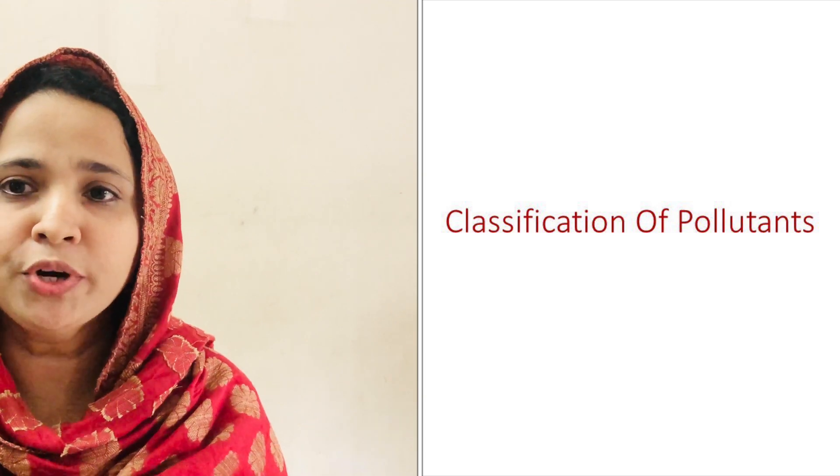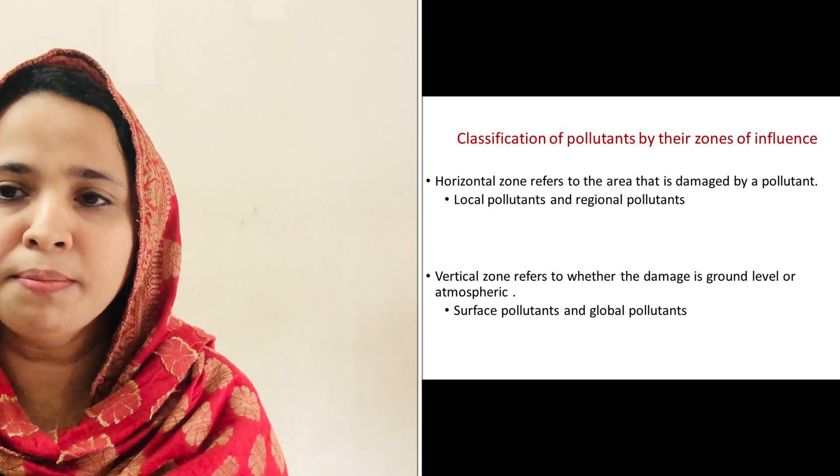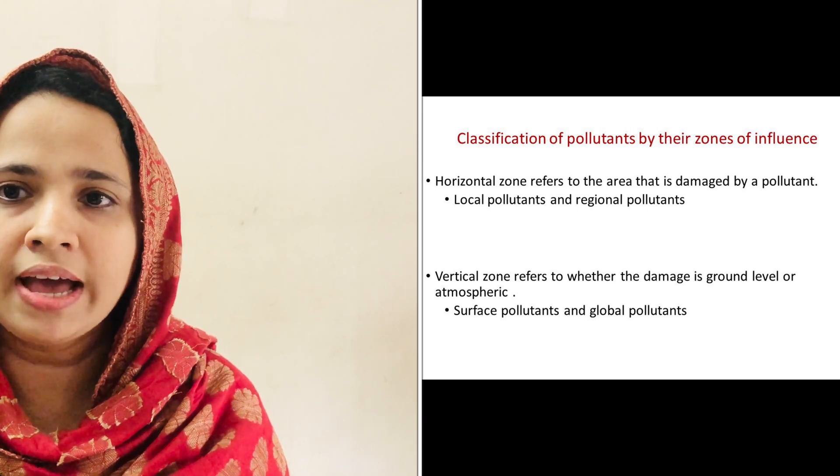Now we can come to the point of pollutant. What do you mean by the term pollutant? It is the factor or agent which is responsible for pollution. It may be any solid, liquid or gaseous substance that contaminates the environment — any solid, liquid or gaseous substance present in greater concentration than in natural abundance, or any agent like heat or noise produced due to human activities or natural happenings, and ultimately harmful to the environment, is called a pollutant. Pollutants may be classified in different ways. An important way of classification is based on the zone of influence. Horizontal zone refers to the area that is damaged by the pollutant. For example, local pollutants and regional pollutants.